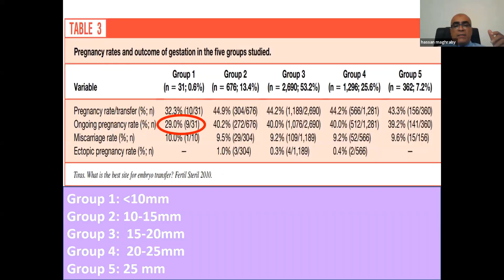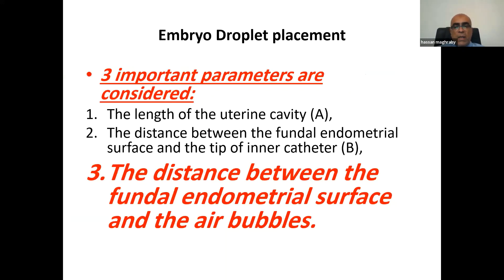Looking at this study, the first group in which embryos were placed less than 10 millimeters from the tip of the fundus endometrium stripe had the lowest pregnancy rate. On the other hand, recent publications and experiences showed that the distance between the fundus endometrium surface and the air bubble should be less than 10 millimeters.